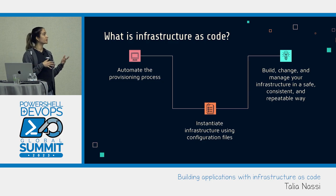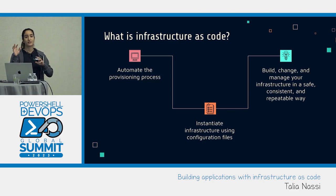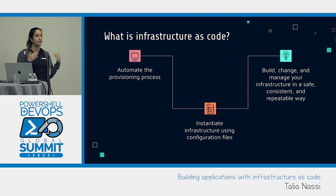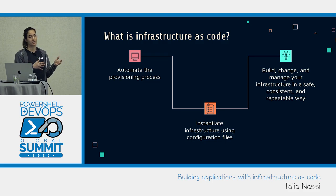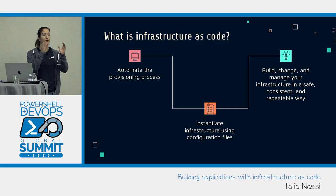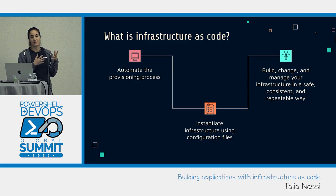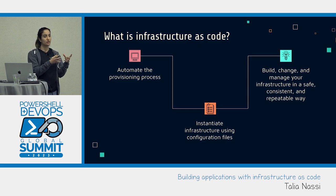With infrastructure as code, you're automating that provisioning process. You're not going to go to the console and click on the services you want and configure resources from there. Instead, you have what's called a configuration file. In this configuration file, you define all of the resources you want for your application and all the configurations for those resources. That tells you how to instantiate your infrastructure — you're doing it from a configuration file, not from the UI.